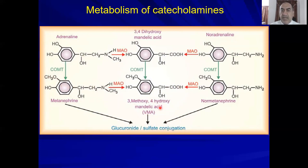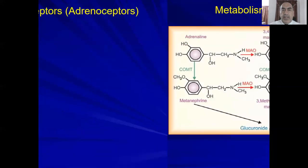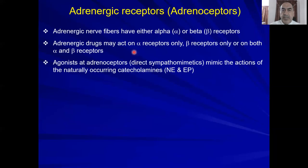Vanillylmandelic acid can be used to trace the effect of drugs on tumors such as pheochromocytoma, which is a tumor in the adrenal medulla that leads to excess production of noradrenaline and severe hypertension. Now let us talk about the adrenergic receptors.